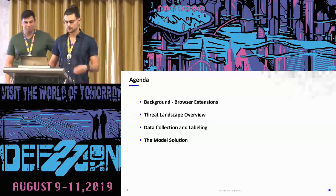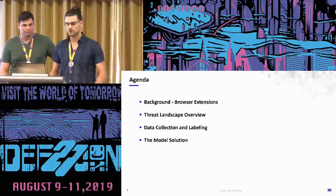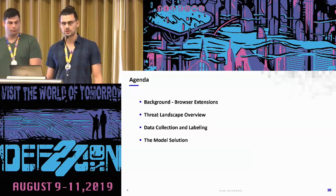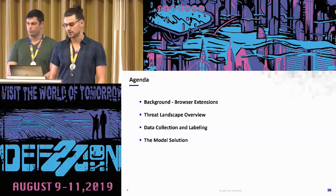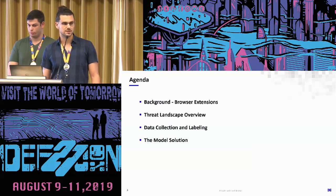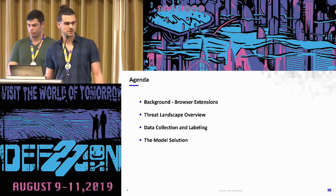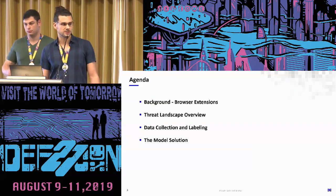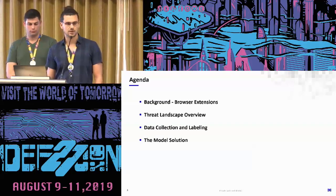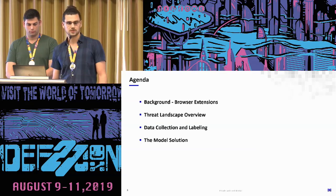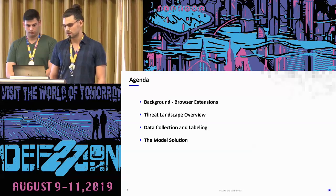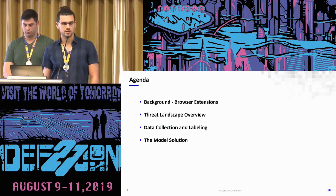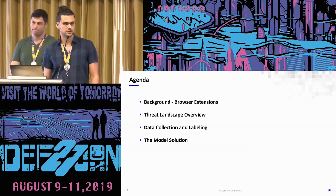The agenda for today: first we're going to talk about some background on browser extensions and why we decided to work on Chrome extensions specifically. After that, we'll talk about the threat landscape and show some examples of attacks done using Chrome extensions. Then we'll talk about the collection of data and the creation of datasets, the sourcing of the data, and the ground truth tools we used to validate the data. And after that, we'll talk about the models we created and show three models that we tried along with results.